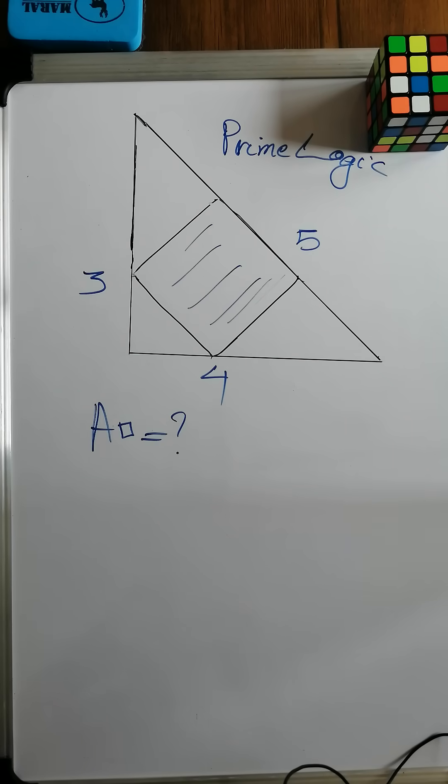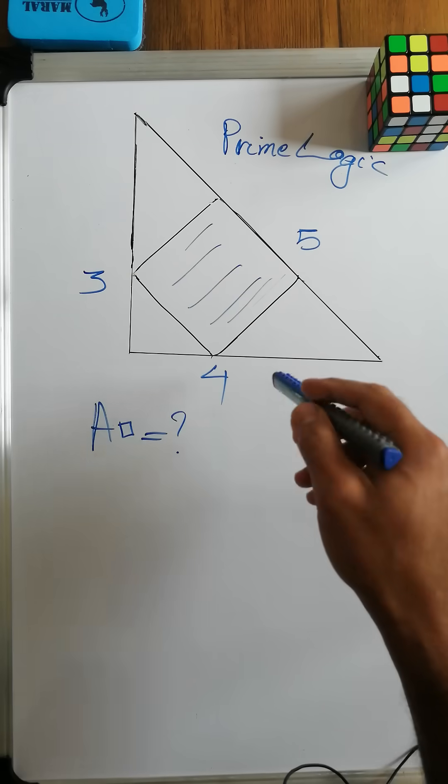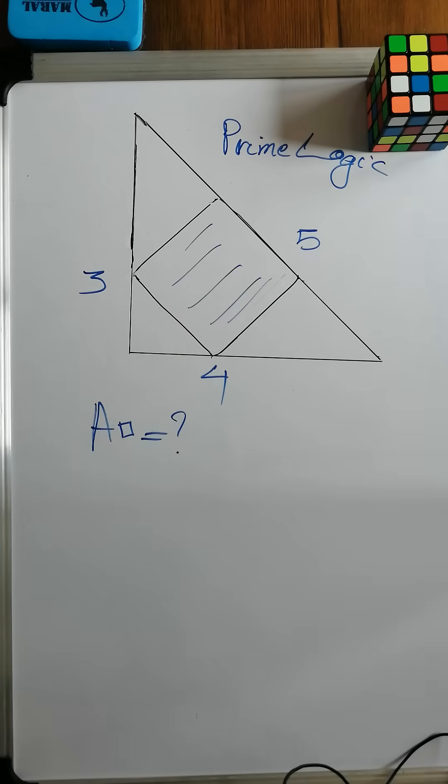Alright, what is up guys, welcome to another video on Prime Logic. Today I've got a really interesting problem for you. If you want to solve this problem, please pause the video because I'm going to solve it right now. The problem setup says we have a right angle triangle with the sides 3, 4, and the hypotenuse of 5.